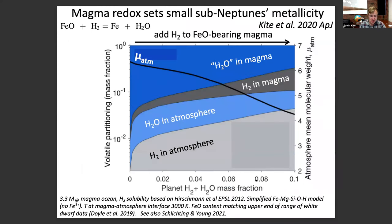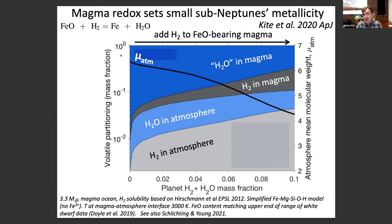What about if we include redox chemistry? This is a calculation adding hydrogen to magma. On the left, we've added a little bit of hydrogen to the magma; on the right, a huge amount. It's a log scale showing where the hydrogen goes after you allow for magma-atmosphere equilibration. When you don't add much hydrogen, the magma basically turns almost all of it into water, and because water is really soluble, the water gets stored in the magma. But as I add more and more hydrogen, it starts to swamp the magma, and more of the hydrogen is stored in the atmosphere. So the atmospheric mean molecular weight gradually declines as you go through that process. The fate of hydrogen and atmosphere composition are both determined by magma redox.